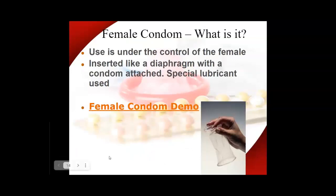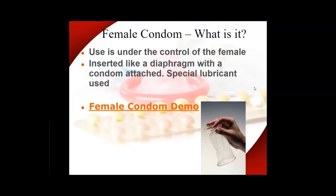There is also a female condom, which is a little bit larger. It gives the female control over her own choices and can be placed in advance — up to eight hours before intercourse. It's inserted similarly to a tampon using a flexible ring: you pinch the ring and insert it. This method is newer on the market and probably not talked about as much as the male condom.